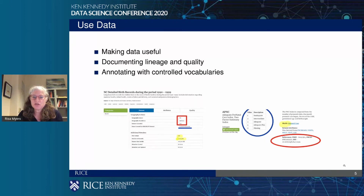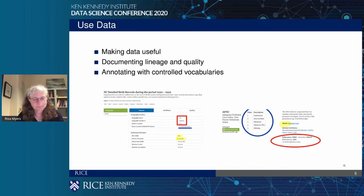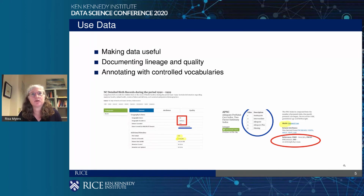We're also using controlled vocabularies to make the data more useful and understandable — in this case, MESH, the Medical Subject Headings coordinated by the National Library of Medicine, to annotate our attributes when it makes sense. We also have a quality tab for many of our data sets that tells you, for instance, how many of the records have been geocoded.